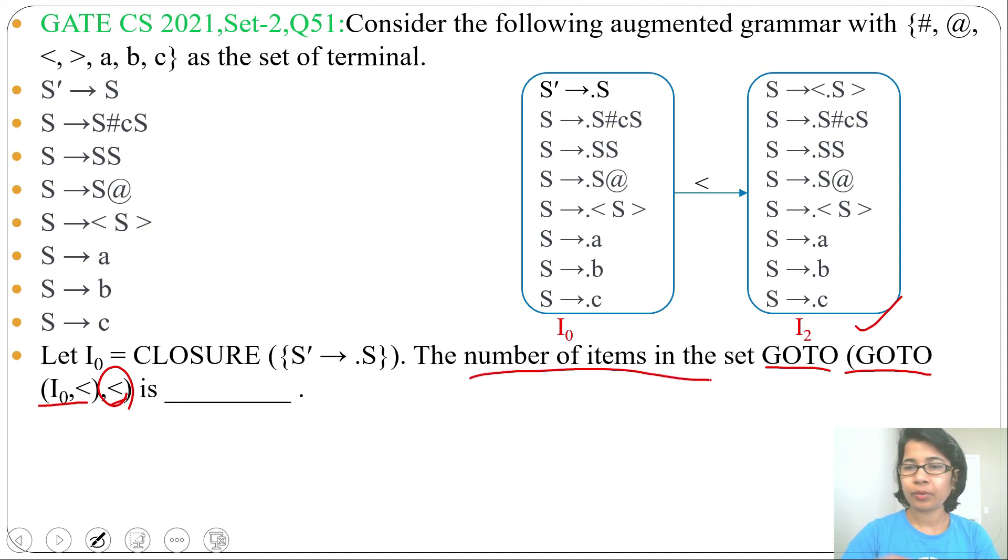So by less than symbol it will go to another state where the LR0 item will be S derives less than dot S greater than. And as dot is before S, we need to add closure of it. So it will be the same state.